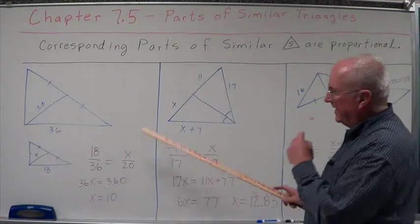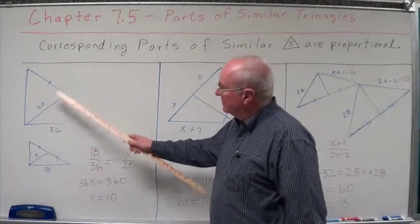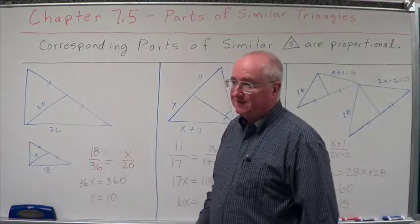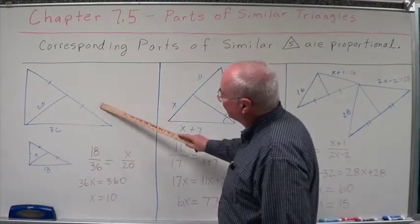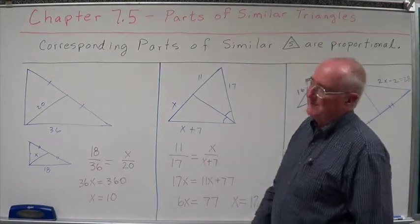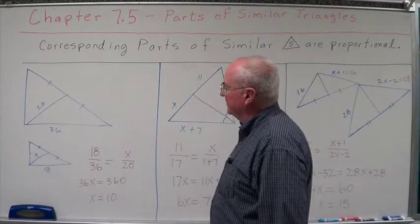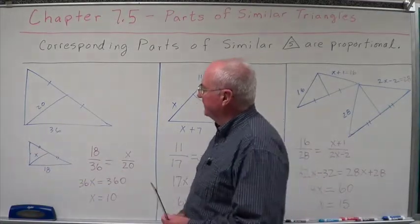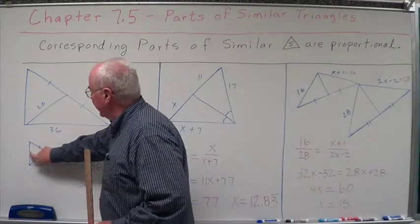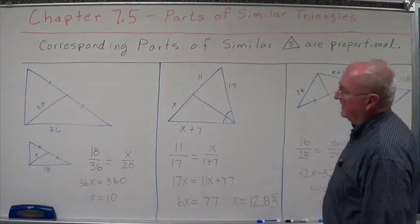Over here, what we're looking at is a median. This thing right here is a median. How do we know? Well, it comes from the opposite vertex and it divides the opposite side into two congruent pieces. So it is a midpoint of the opposite side, comes from the opposite vertex. Same thing down here. So what we're looking at is proportional medians.